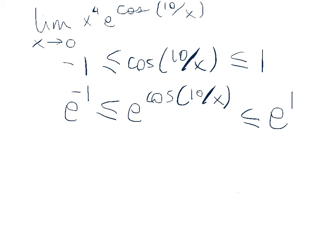We're almost ready to apply the squeeze theorem, but we need the whole function in the middle of the inequality. The missing piece is the factor of x to the 4th. Since x to the 4th is a positive number — x is anything but 0 here — x to the 4th is going to be a positive number. I can multiply each piece of an inequality by a positive number without changing the direction of the inequality. If it were just x by itself, I'd have a problem when x is negative, but x to the 4th is never negative.